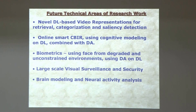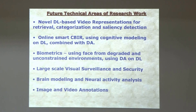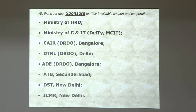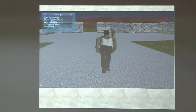My future technical areas include brain modeling and neural activity analysis, novel deep learning algorithms for visual representation and categorization, action detection, quantitative modeling with domain adaptation for images, multi-biometric human recognition, and image and video annotation — generating sentence descriptions from input images or video, which is one of the high-end tasks in machine learning. We're also exploring virtual reality applications for apparel fitting.